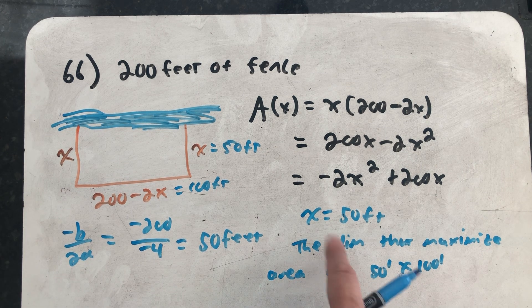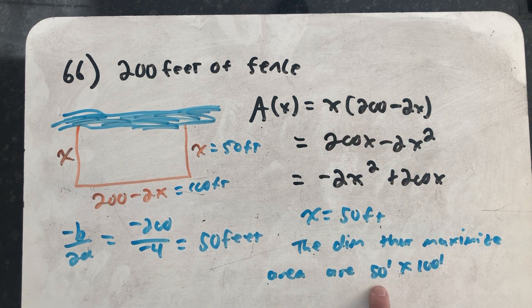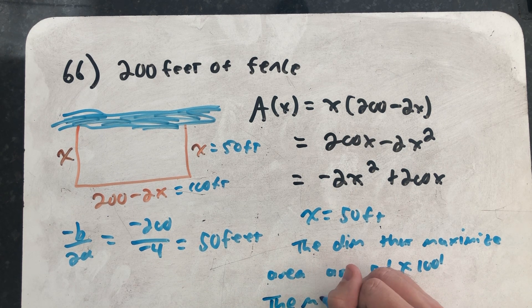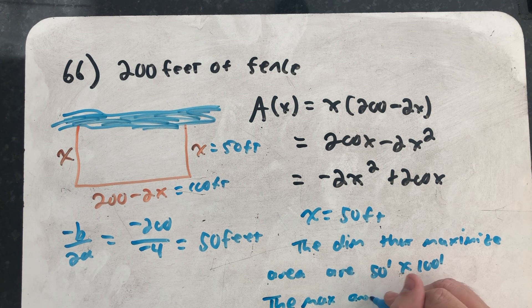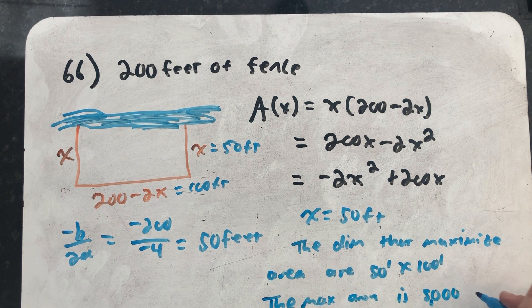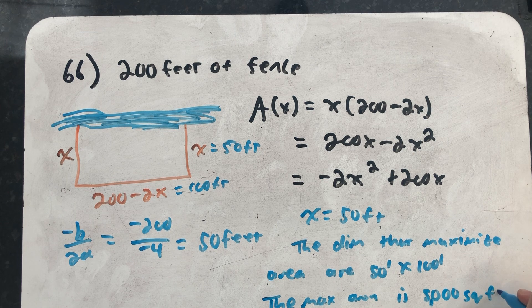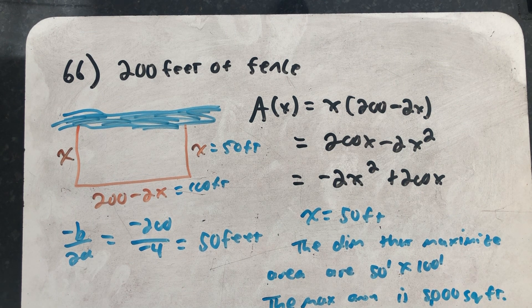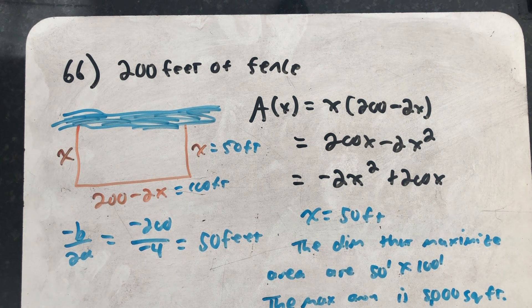I'm also asked for the maximum area. And I can totally plug 50 into this function to do it, but I can also just multiply those together. The maximum area is 5,000 square feet. And there we have it. We've maximized that plot of land and completed all of the problems we set out to do in section 2.2.